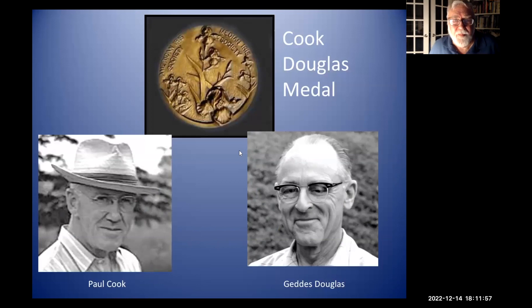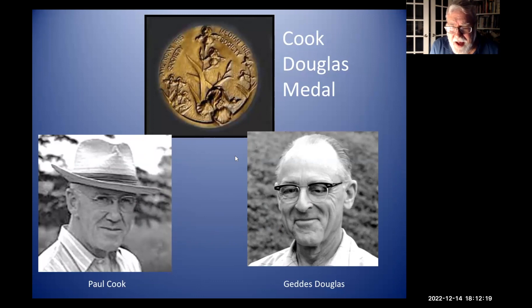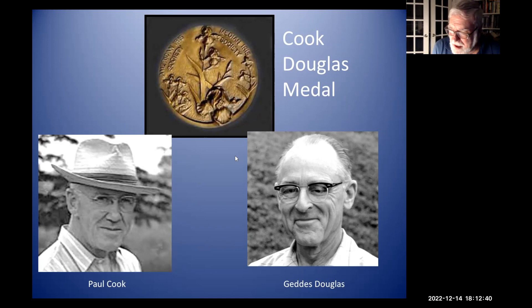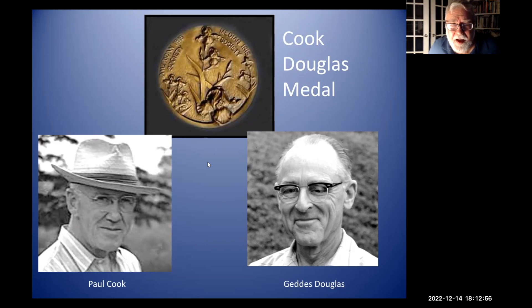One of the most successful species crosses for the American Iris Society was the cross of Iris pumila with tall bearded irises, which produced the standard dwarfs. Paul Cook and Geddes Douglas were important in this. The story goes that they were both postmasters or postmen and would exchange pollen by mail - when Geddes Douglas had tall bearded blooming in Kentucky and Paul Cook had pumulas blooming in Indiana, he could send the pumula pollen to Douglas to do the crosses. Because of their work in initiating that group, the Cook Douglas Medal is named after them.